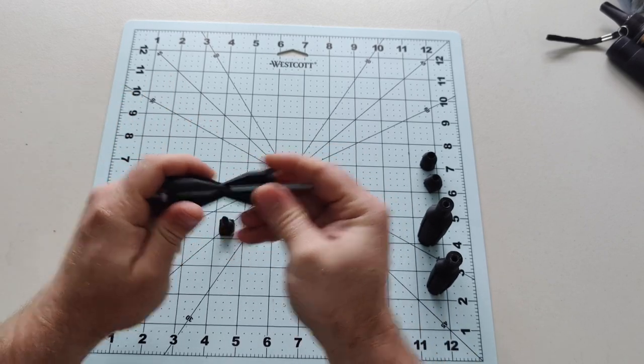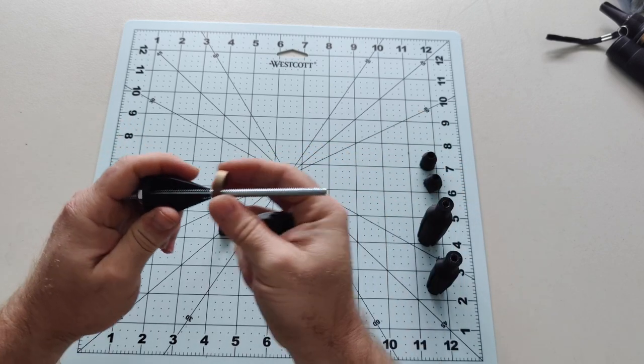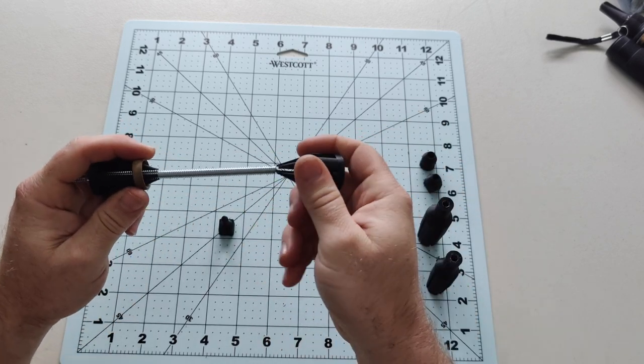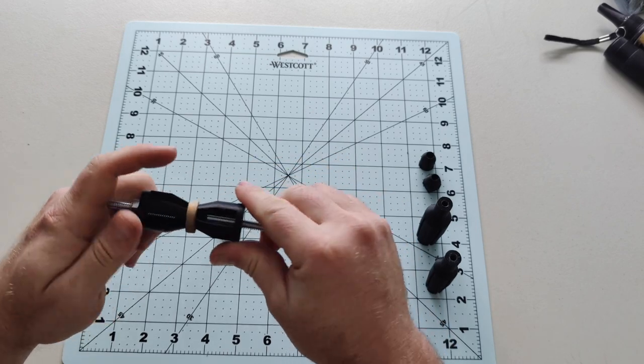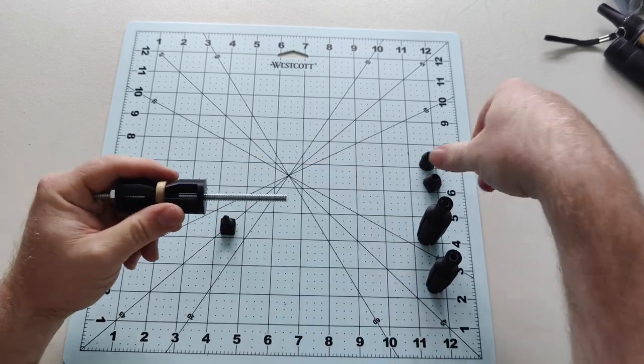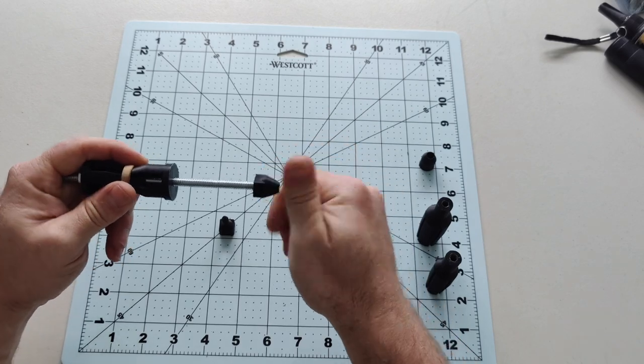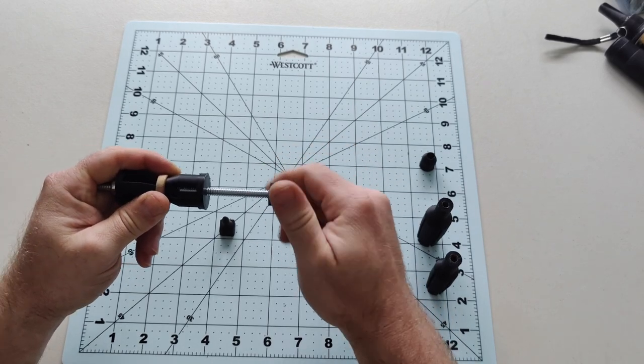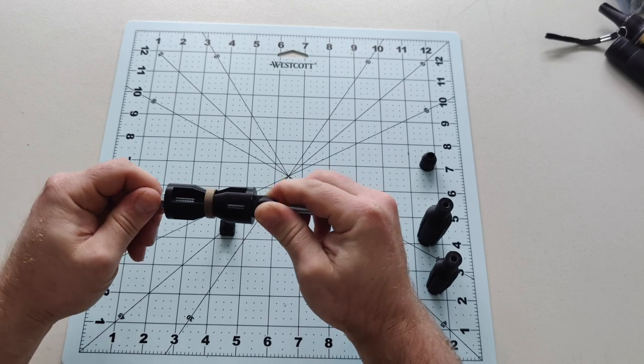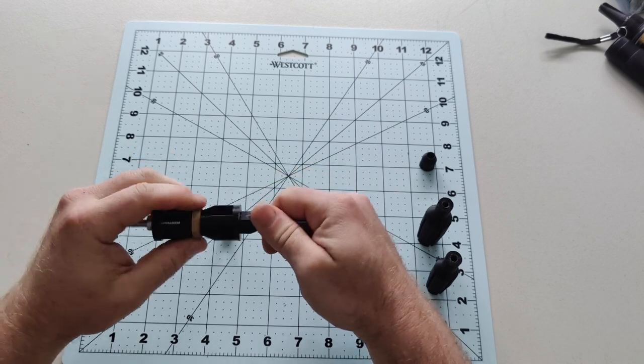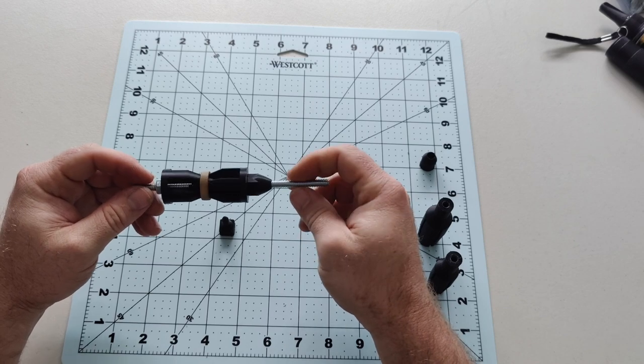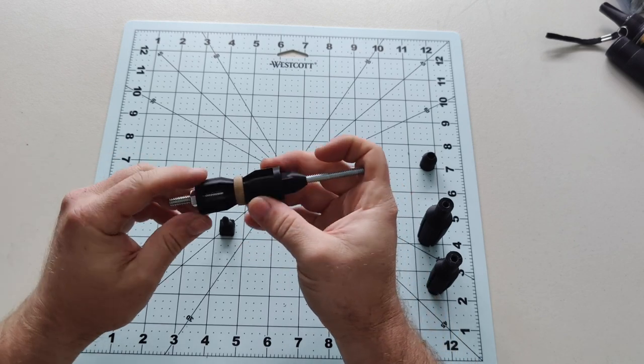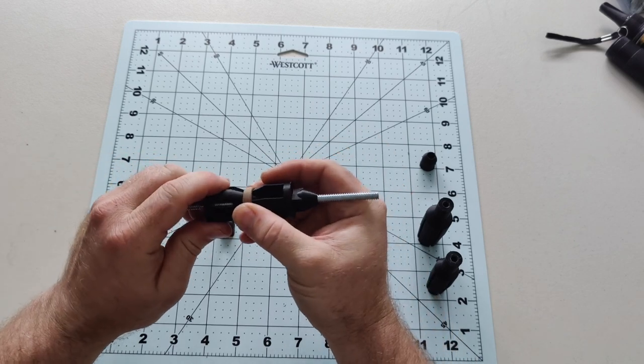You've got your universal mandrel which can easily reach in and grab that. And you'll take this little nut and flip it over so it's snug on there. And that's how the universal mandrel works.